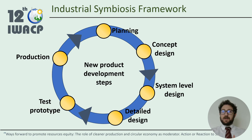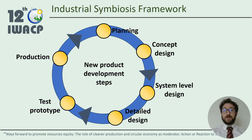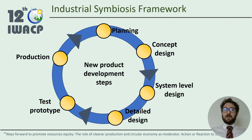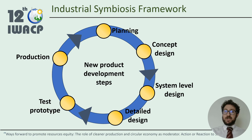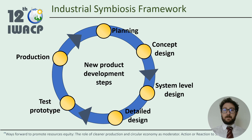One novelty of the industrial symbiotic framework is the two-level classification. The core of industrial symbiotic networks are the production companies, because they produce, exchange and reuse waste. Therefore, the first classification layer is the new product development stage in which the companies described in each paper are at that moment — they may be planning a product, creating the supply network, or already in production. This stage affects the types of barriers and drivers that companies face when trying to implement or establish industrial symbiosis, and this classification helps us to understand the barriers and drivers reported in each paper.